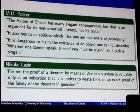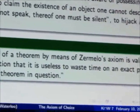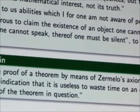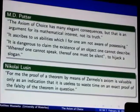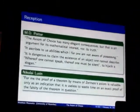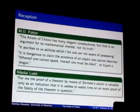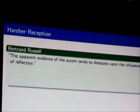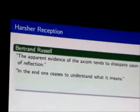Lebesgue said, for me, the proof of the theorem using Zermelo's axiom is valuable only as an indication that is useless to waste time on the exact proof of the falsity of the theorem. So he's saying, if you can prove something with the axiom of choice, then I know it can't be wrong. So I know I shouldn't spend time trying to prove the opposite of that statement. But it was not at all satisfactory to him. Russell had much harsher criticism. The apparent evidence of the axiom tends to dissipate upon the influence of reflection. In the end, one ceases to understand what it means.